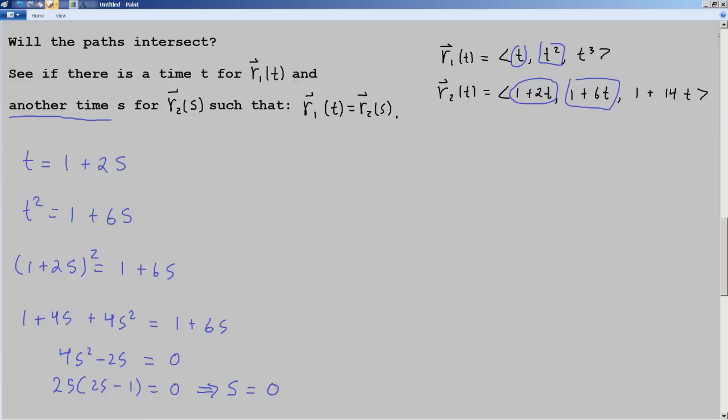Factor out the 2S and we'll have 2S times (2S minus 1) equals 0. Therefore, S equals 0 and S equals 1 half. If S is equal to 0, that means T is equal to 1. And if S is equal to 1 half, that means T is equal to 2. I'm just plugging those values into this equation. So now we have our S and T pairs. So what do we do?